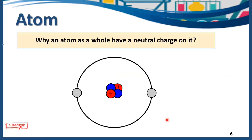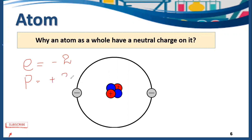Why does an atom as a whole have a neutral charge? As you can see, this is an atom of helium, and the atomic number of helium is two. So the number of electrons in helium is equal to minus two and the number of protons is equal to plus two. Since these are equal with opposite signs, they cancel the effect of each other, and the whole atom is neutral. The number of electrons and the number of protons are always the same in an atom.